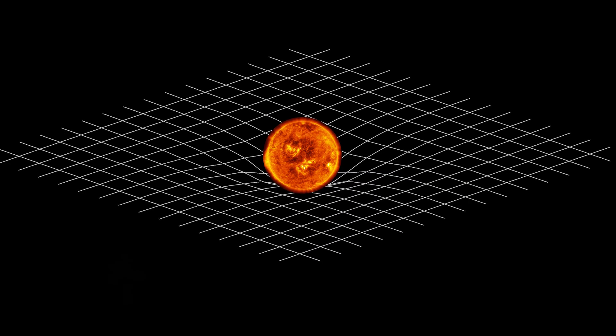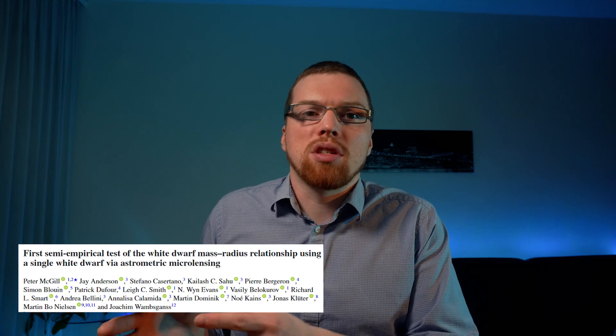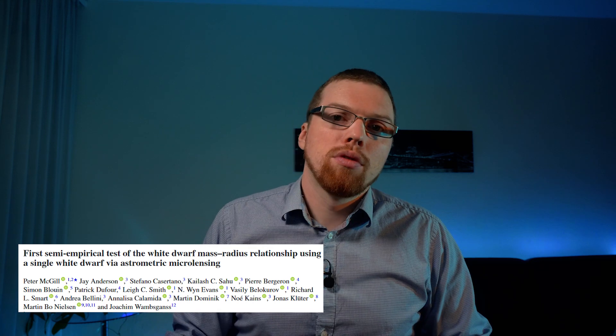How can we weigh a star? We can use models to estimate the mass of a star, but how can we fundamentally measure it without a model? Stars are massive objects that warp the space around them, and we can use this fact to measure their mass. Scientists have just demonstrated this on the dead remnants of a star, a white dwarf. So how did they measure a white dwarf's mass? How heavy was it? And does this tell us anything about what is happening inside of these stars? Let's discuss it.